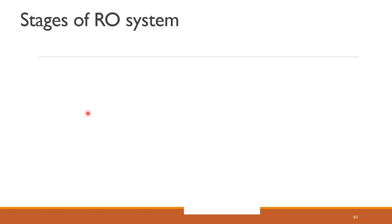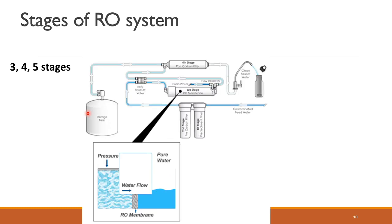Next are the stages of an RO system. When you have a water purifier using reverse osmosis, you will not have only the RO membrane setup — you will have additional filters as well. Based on the number of filters used, there can be 3, 4, or 5 different stages. The entire reverse osmosis system makes use of two types of filters: a sediment filter and a carbon filter, in addition to the reverse osmosis membrane filter.